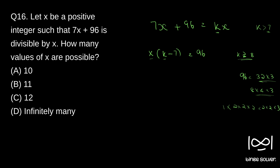The possible values of x start with x equal to 1. If x equals 1, then k minus 7 has to be 96, which means k minus 7 equals 103. So for k equal to 103 and x equal to 1, this equation is satisfied. Similarly, x equals 2 and x equals 3 are also possible values.